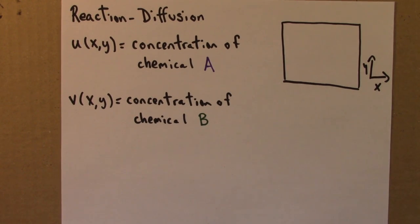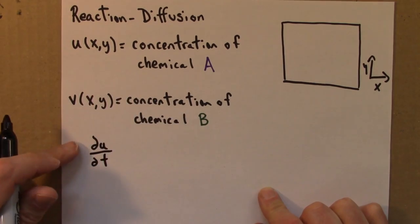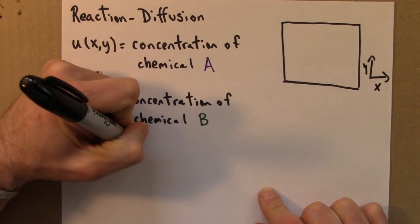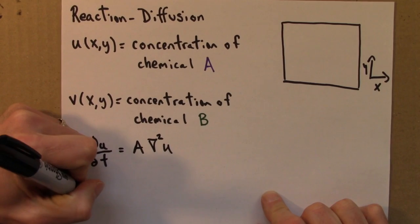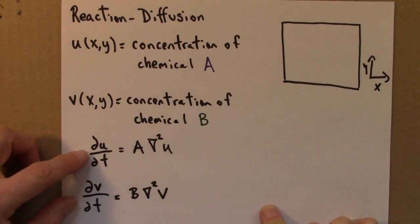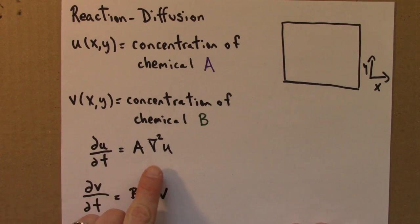Alright, so what are the equations that govern this? Well, both of these will diffuse. So, they're described by a diffusion term. Remember that looks like this. The partial derivative of u with respect to t, the rate of change of u, is going to be A delta squared u, and similarly for v. So far this is just what we had before. There's no interaction or reaction between these two terms. This just describes the diffusion of chemical A, and this describes the diffusion of chemical B. And A and B are the diffusion constants, and they might be different. So they might diffuse at different rates. They might spread out through the surface. One may be faster than the other.